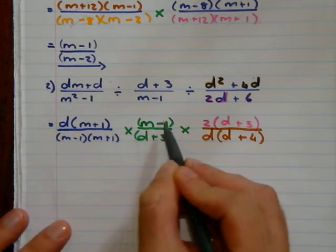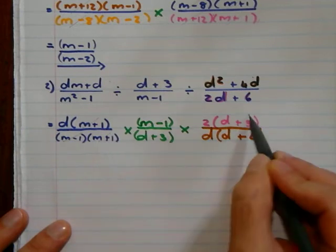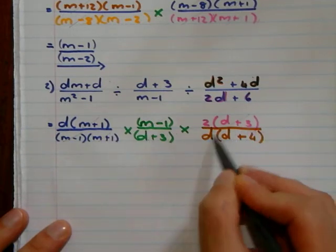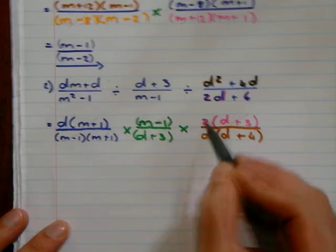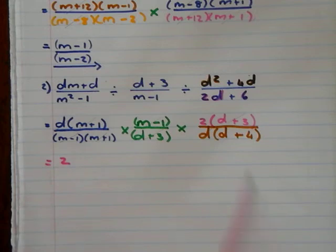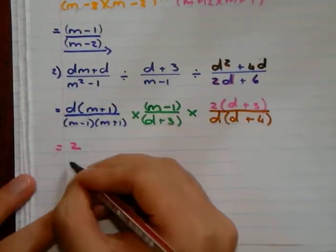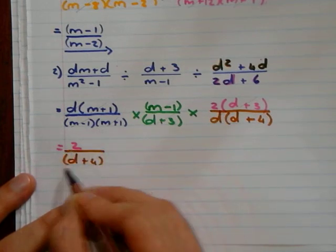Now I take my pencil and see what's at the bottom, what's at the top. There's M minus 1, M minus 1, M plus 1, M plus 1, D plus 3, D plus 3. There's a D, there's a D. What do I have at the top? I have a 2 left. At the bottom, I have D plus 4 left. There is my answer.